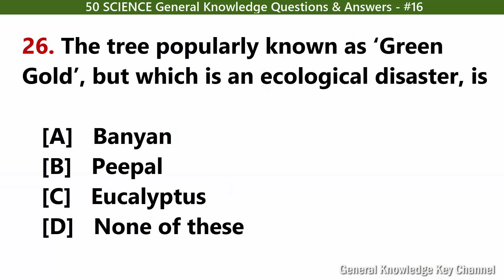The tree popularly known as green gold but which is an ecological disaster is? Answer C: Eucalyptus.